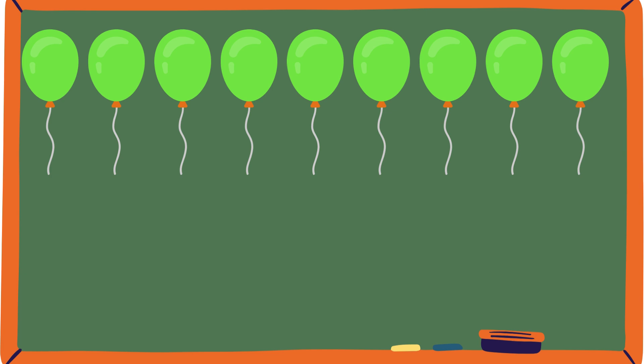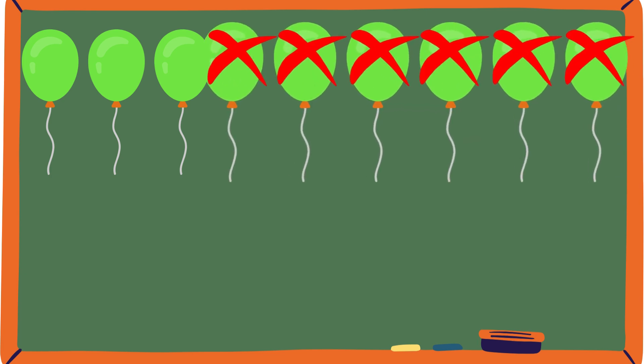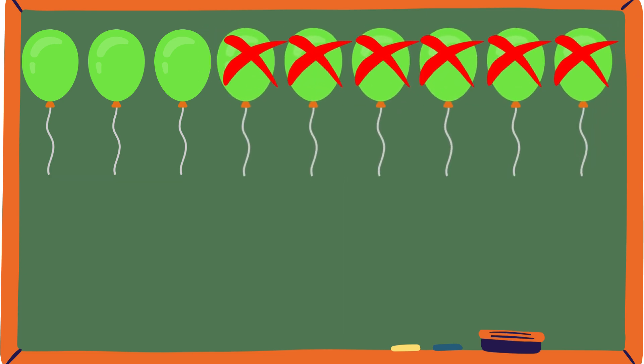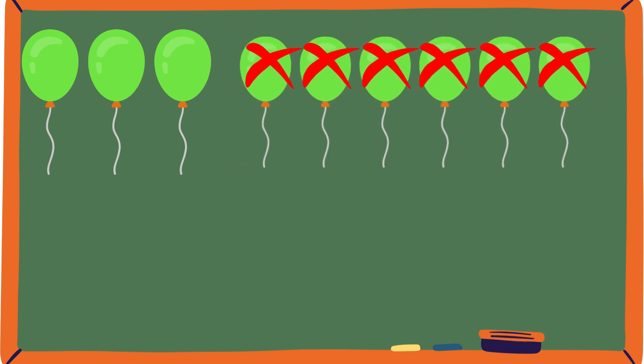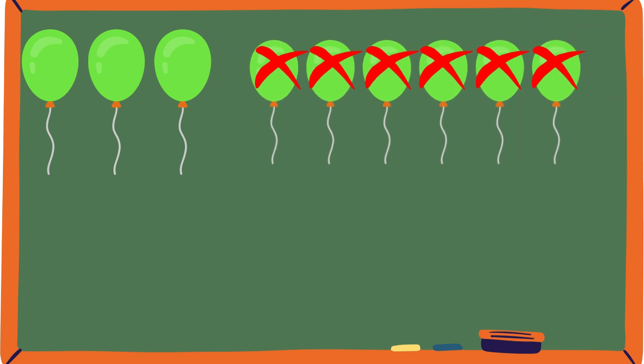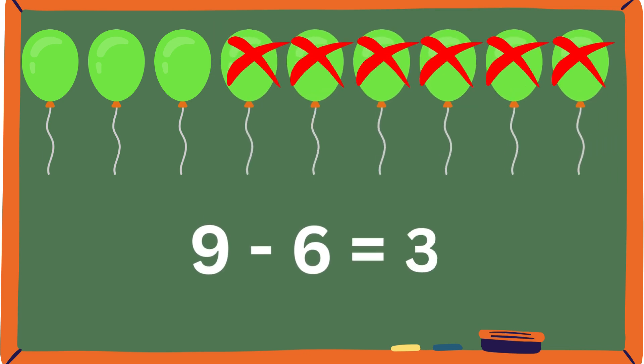Green balloons. 1, 2, 3, 4, 5, 6, 7, 8, 9. 9 again. 6 get popped. How many balloons are left? If you said 3, then that's the correct answer. This is the equation. 9 minus 6 equals 3.